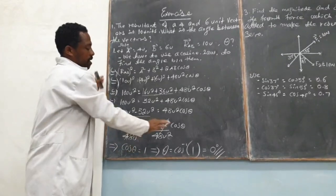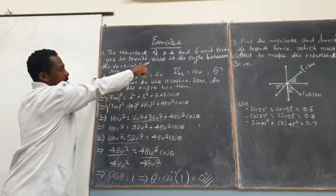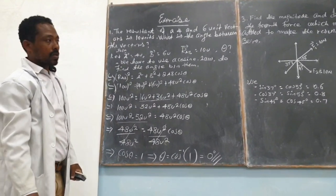From this we understand that vector 4 and vector 6 are collinear vectors.